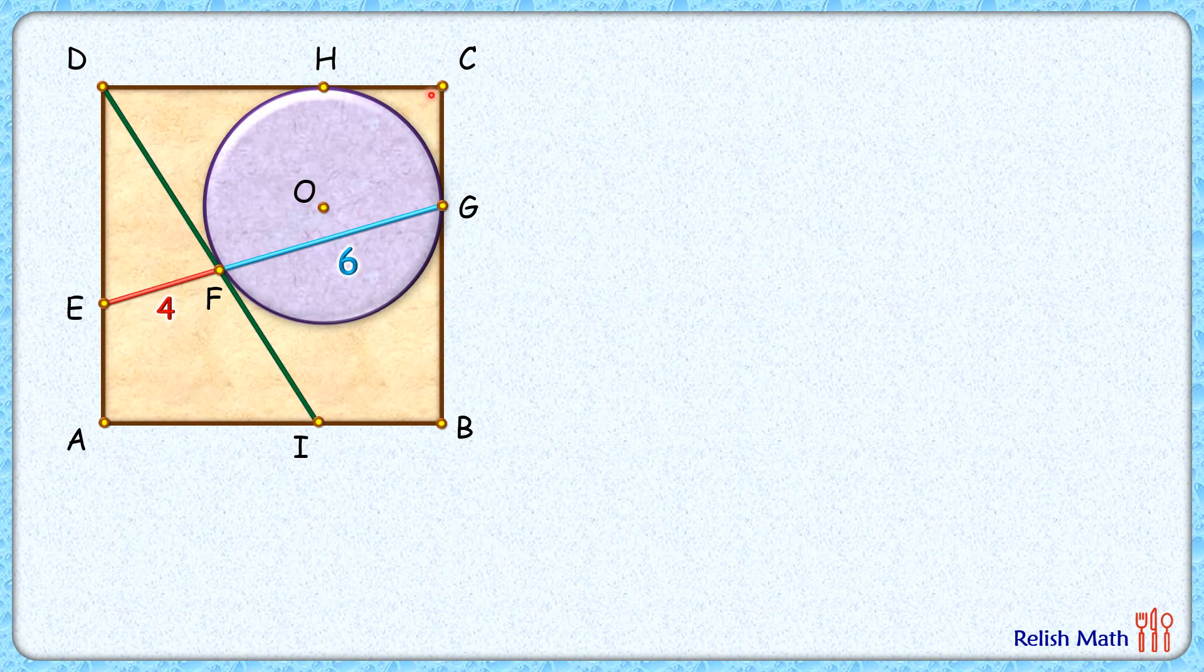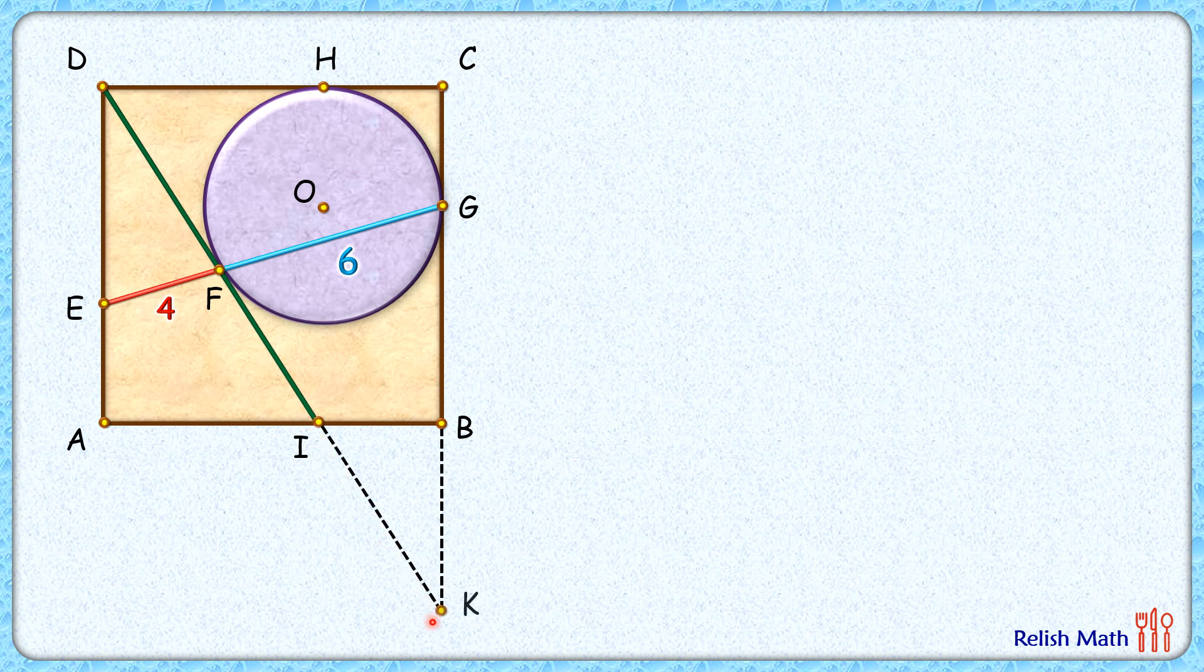Let's start by extending this CB length. Now let's extend this green line segment DI to meet here at point K. If you look carefully, from point K two tangents are drawn on the circle, so they have to be equal in length.